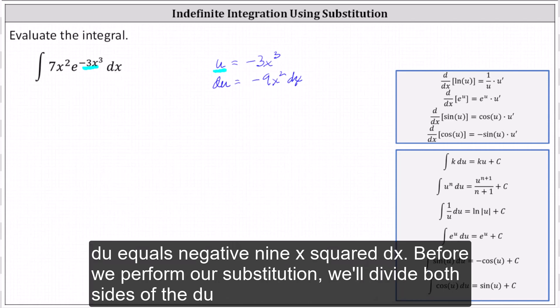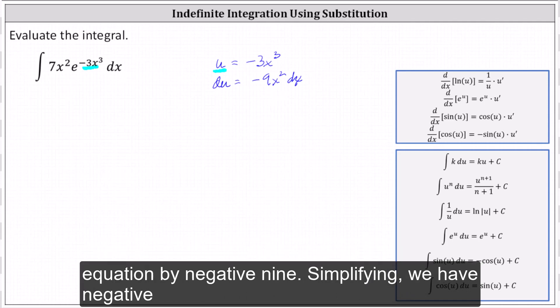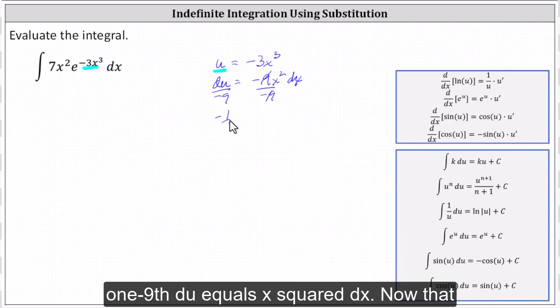Before we perform our substitution, we'll divide both sides of the du equation by negative nine. Simplifying, we have -1/9 du equals x²dx.